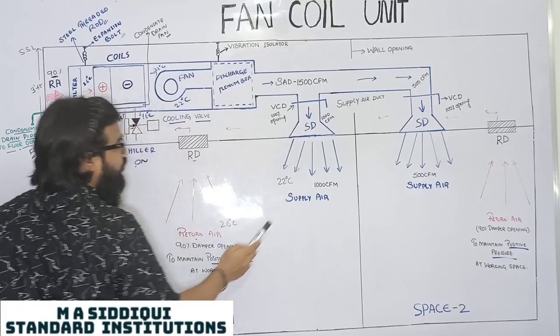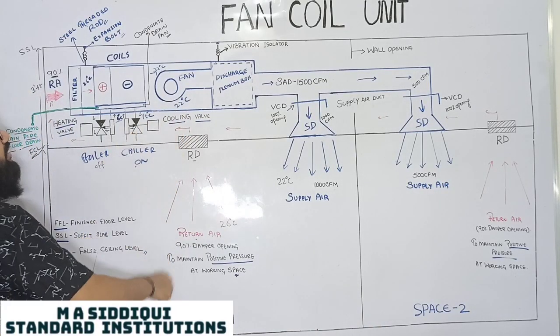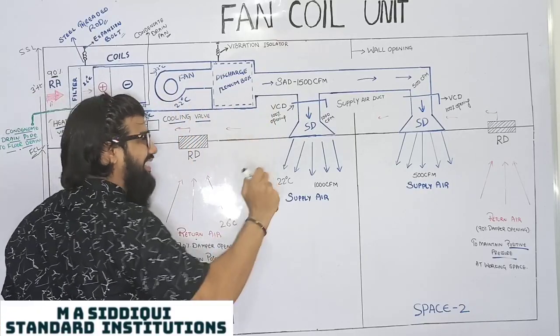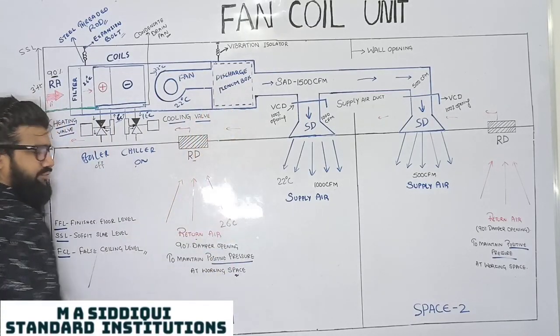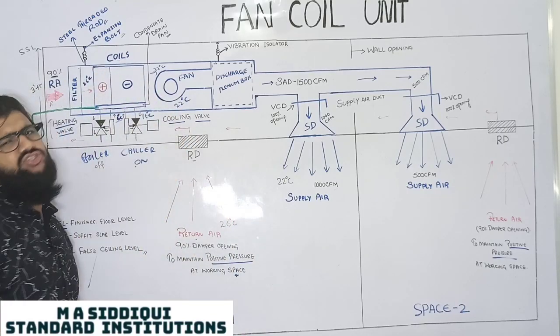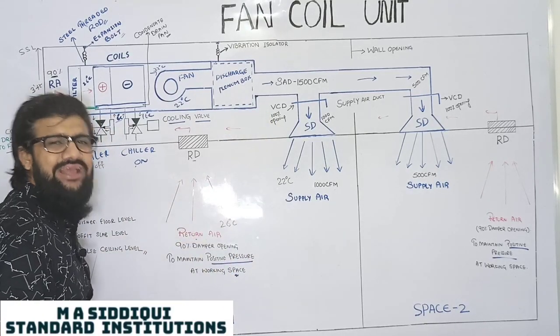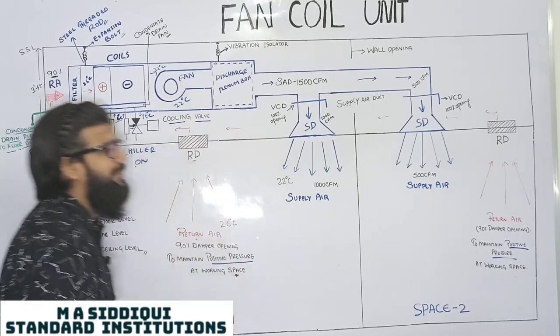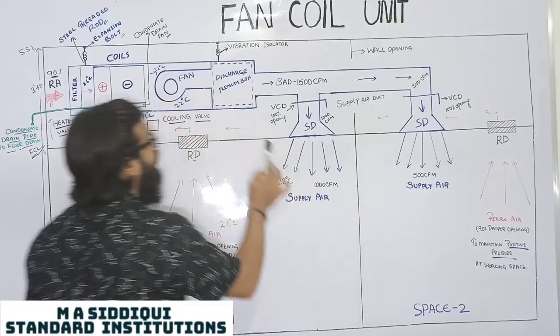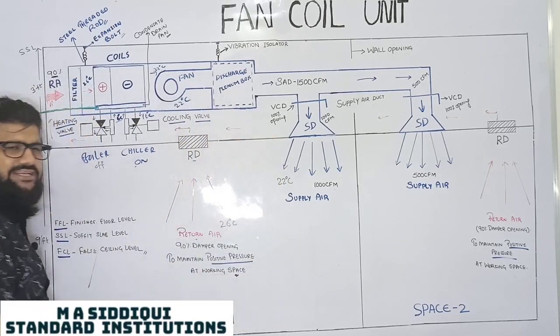This conditioned air is again given back to, as a supply air to your space 1 and to your space 2. This FCU is of capacity 1500 CFM. This 1500 CFM blower will blow the air at a rate of 1500 CFM from your discharge plenum box. Discharge plenum box is used for proper circulation of air without any frictional loss, and such that the mouth of fan blower and the mouth of duct should be equally arranged properly.